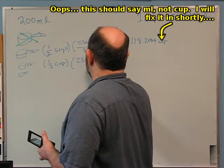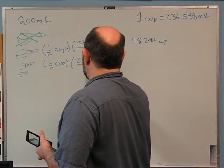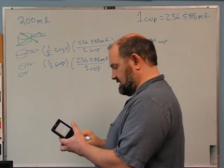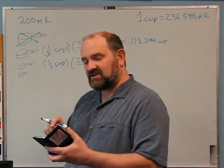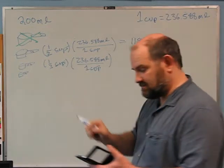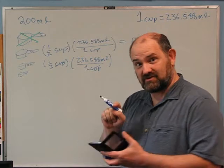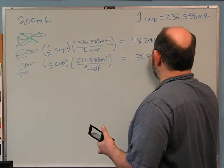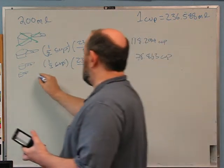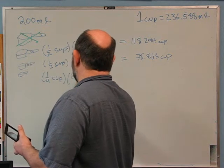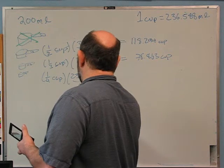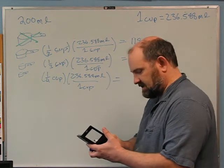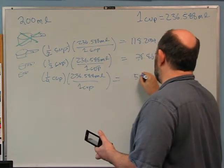Let's figure out one third of a cup using the same conversion: 236.588 milliliters divided by one cup. The cups cancel. I divide 236.588 by 3 and I get 78.863 milliliters. And one quarter of a cup — same conversion — 236.588 divided by four gives me 59.147 milliliters. That's half of the third-cup value.